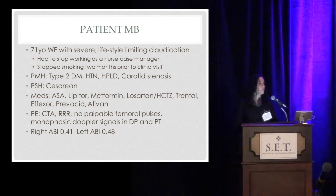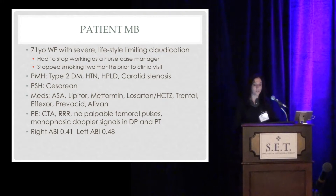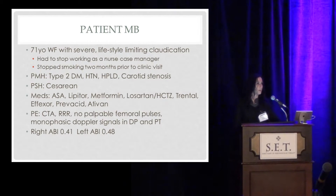Patient MB is a 71-year-old white female who presented with severe lifestyle-limiting claudication. She had had to stop working as a nurse case manager because of the severity of her claudication, and she had stopped smoking two months prior to her clinic visit with me. Her past medical history is significant for type 2 diabetes, hypertension, hyperlipidemia, and carotid stenosis. Her only past surgical history is a C-section, and she's currently medically managed on aspirin and statin, as well as blood pressure and diabetic medications.